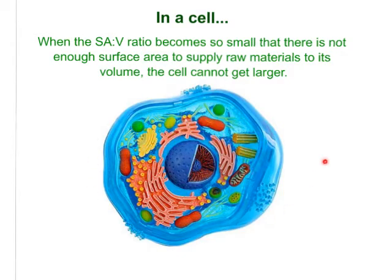Well, as our cell grows, our volume is getting larger, but our surface area is not getting proportionally as large. So there comes a point that there is no longer enough surface area to supply the raw materials to the cell's volume, and the cell can't get any larger. And that is why the surface area to volume ratio is so important, and that's why it's a limiting factor in cell growth.